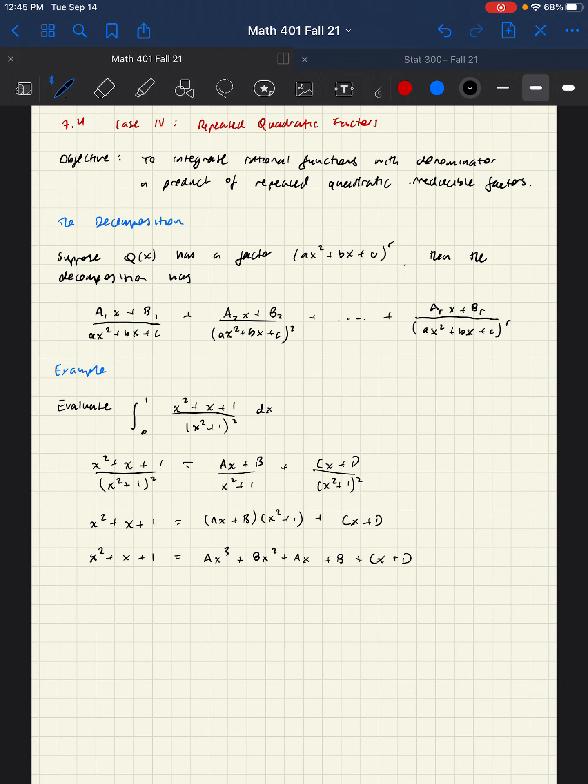We should get four equations out of this because we have four distinct powers of x including the constant term. So the first one is zero equals a, that's easy. One equals b, that's also easy. One equals a plus c, and one equals b plus d.